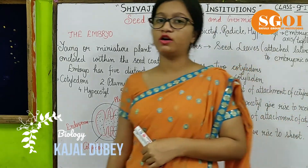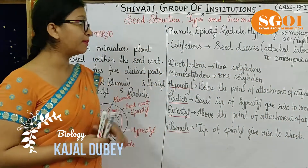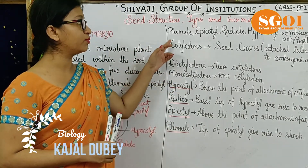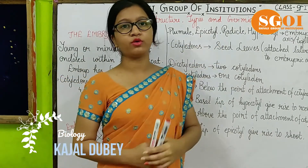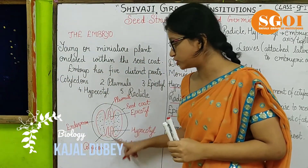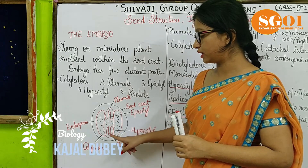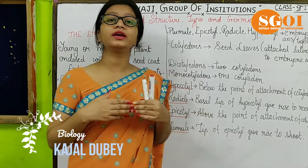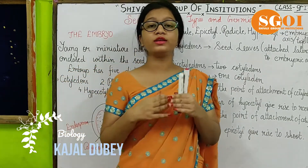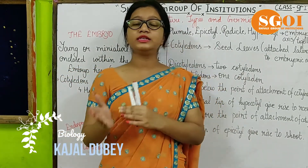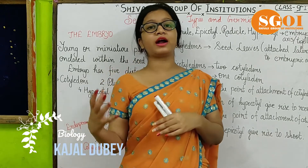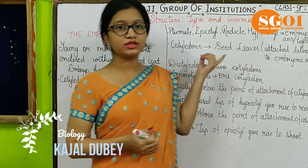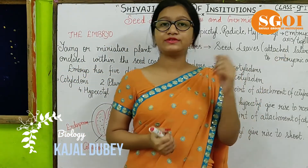So this is about the structure of the seed. If we talk about the important parts we discussed, there are four parts of the embryonic axis: plumule, epicotyl, radicle, and hypocotyl. These four parts form the embryonic axis. Germination in these parts leads to plant formation. Cotyledons are the seed leaves, and based on their number the seeds can be classified into types.